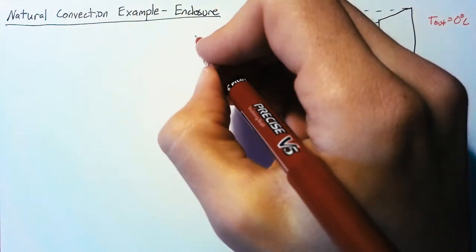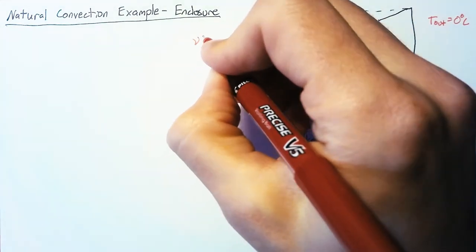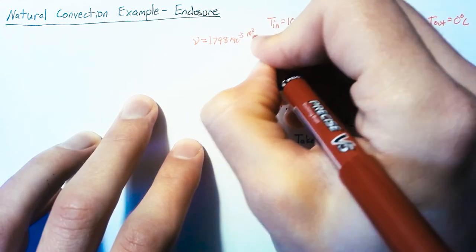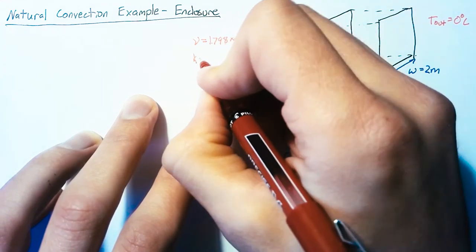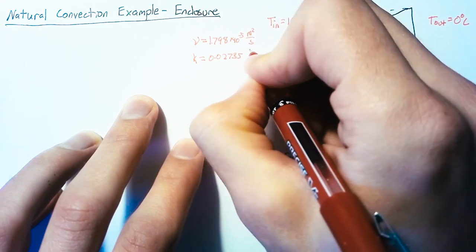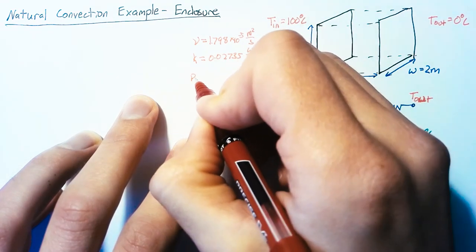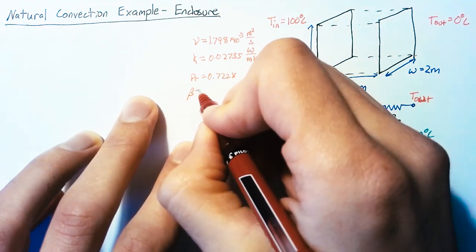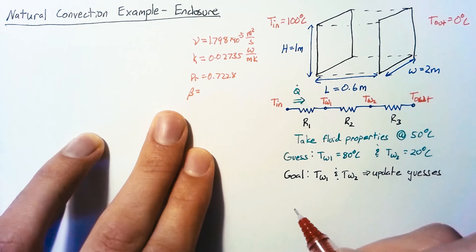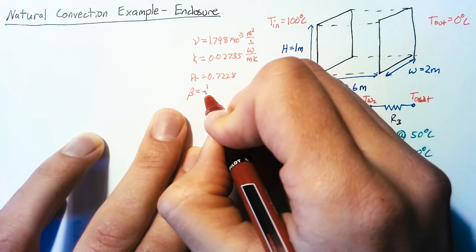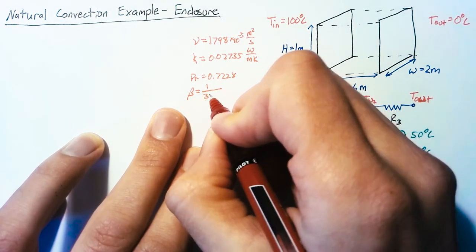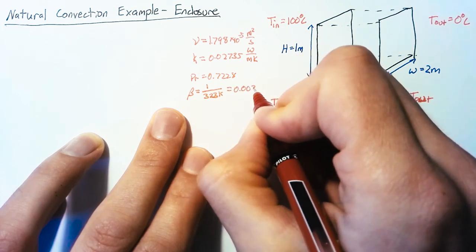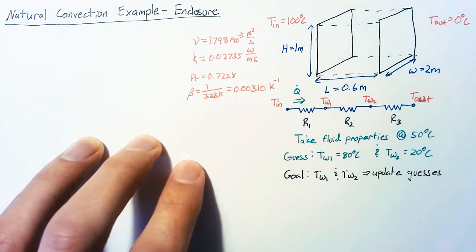So let's go ahead and grab these values for the fluid properties. Our nu value is going to be 1.798 times 10 to the negative 5th. Our thermal conductivity is 0.02735. Our Prandtl number is 0.7228 and finally beta is just 1 over our temperature which is 1 over 323 Kelvin or 0.00310 Kelvin to the negative 1.